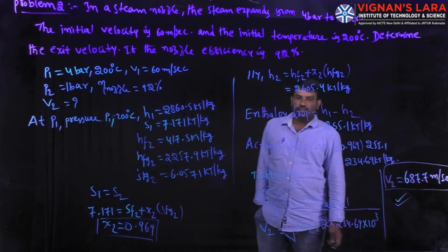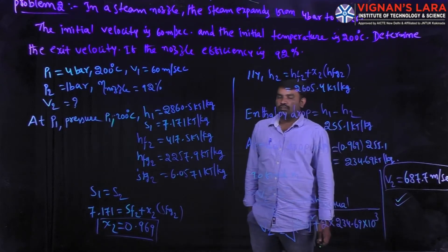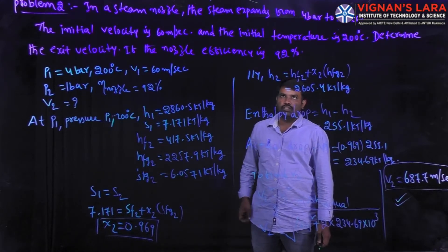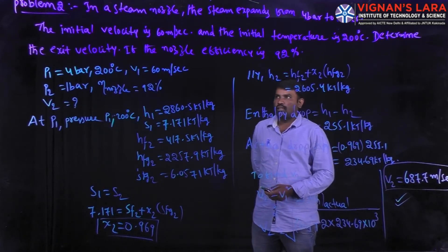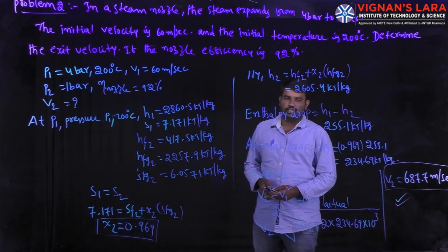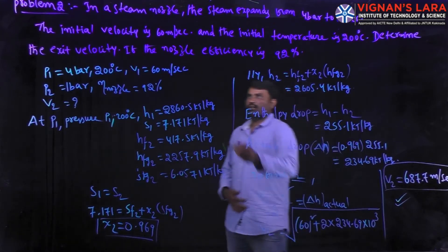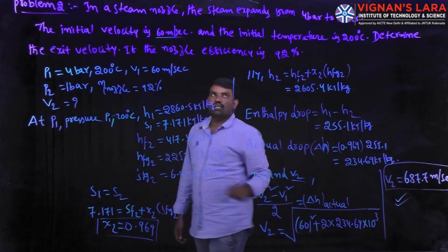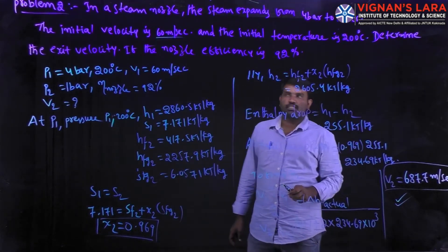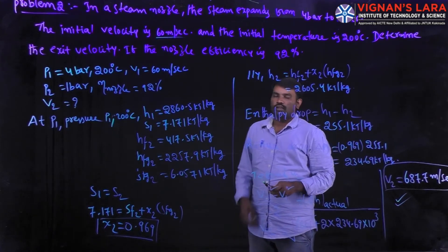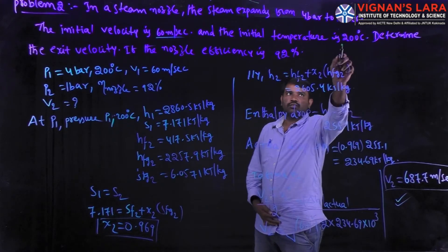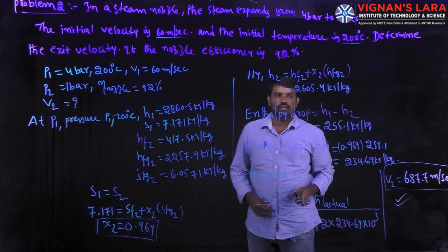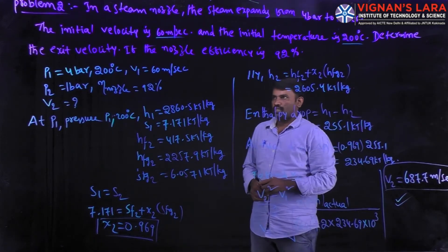Good morning. Today we will see problem number two on a steam nozzle. Steam expands from 4 bar to 1 bar. The initial velocity is 60 meters per second, initial pressure is 4 bar, final pressure is 1 bar, and the initial temperature is 200 degrees centigrade. We need to determine the exit velocity.